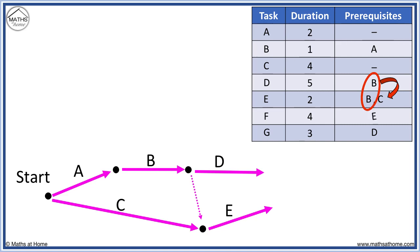Now task F requires task E and task G requires task D. Since all tasks are now drawn, these two final tasks must point to the finish.